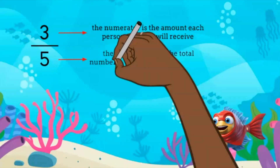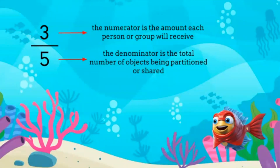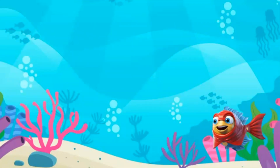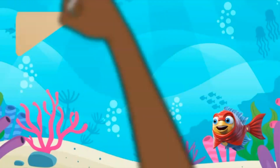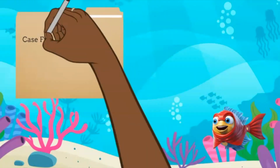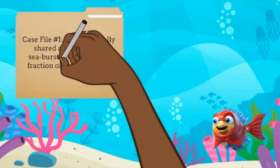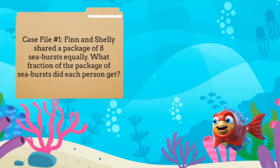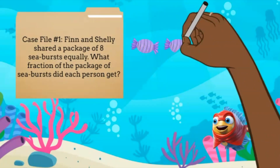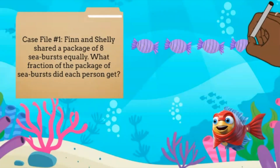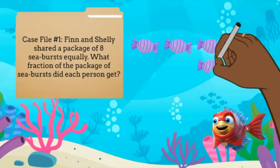The denominator is the total number of objects being partitioned or shared. Here's the first case: the C-Court is in session. Finn and Shelley shared a package of eight C-Bursts equally. What fraction of the package of C-Bursts did each person get?